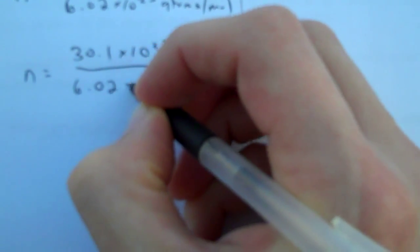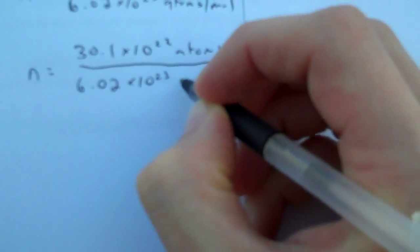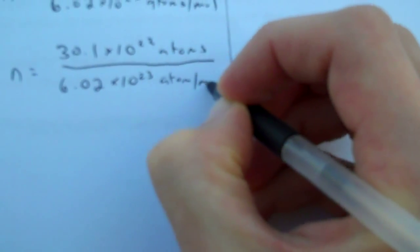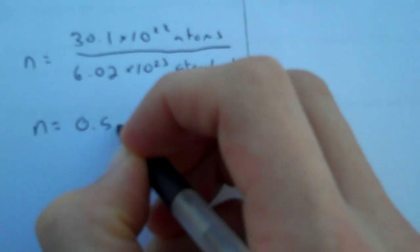Divide by the number of atoms that are found in each mole. And this comes out to n equals 0.5 moles.